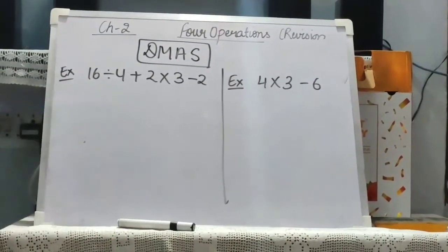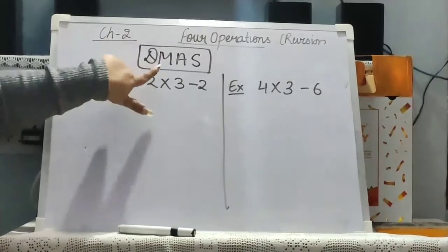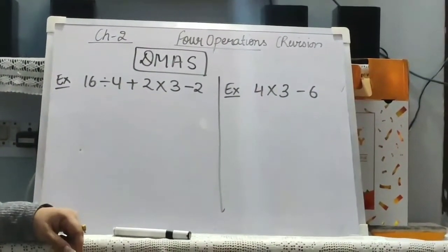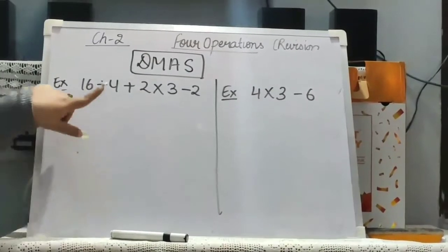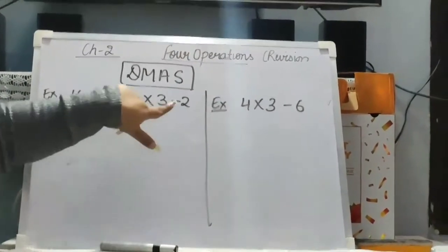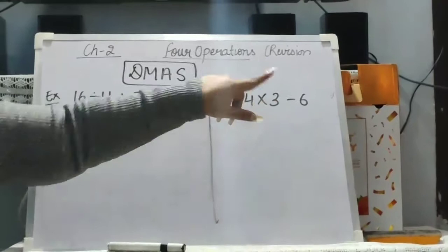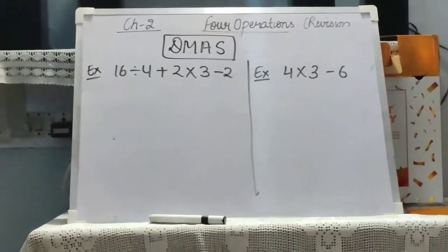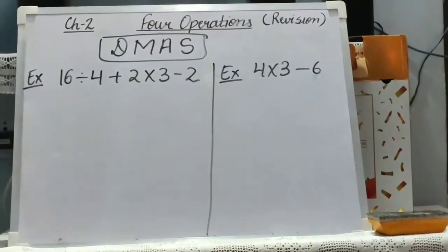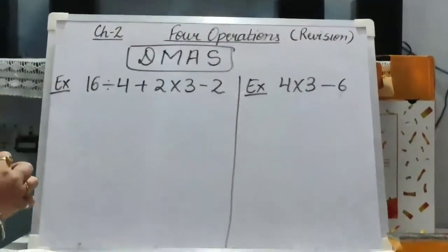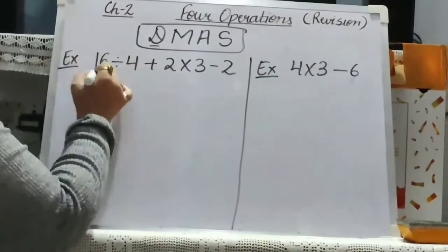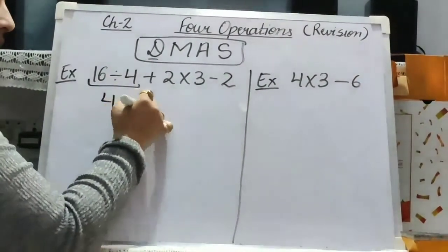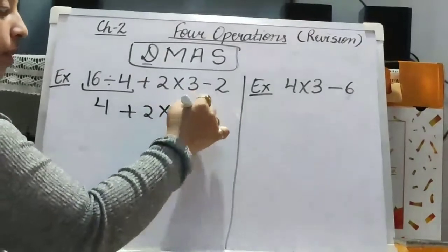After doing all 4 operations separately, we have learnt DMAS, in which we have studied what will be the sequence to solve the operations if all 4 operations or more than one operation are in the same question. To solve this, we will follow the sequence DMAS. First we will divide — so if 16 divided by 4 is 4, the rest will remain the same.